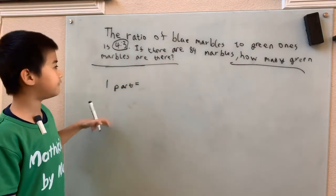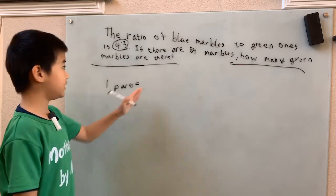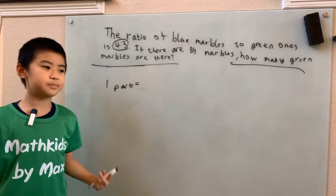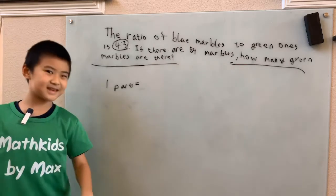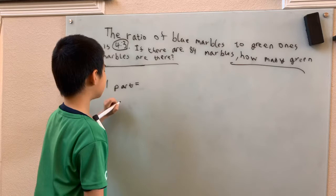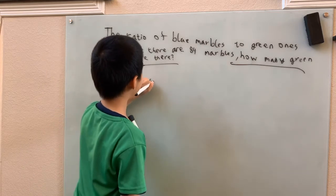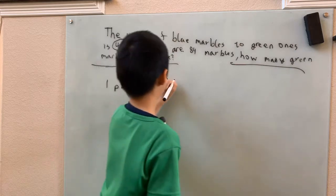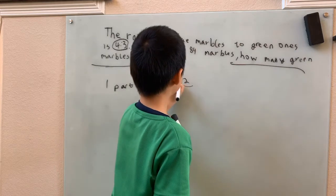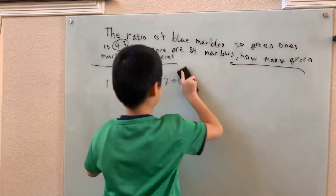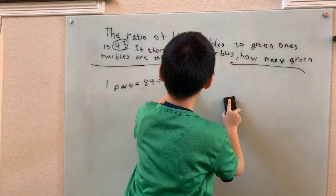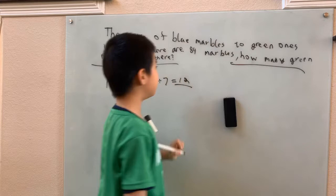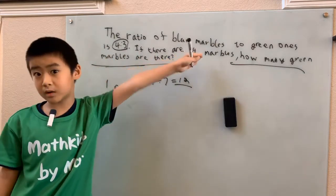So how do we find what one part is worth? Well, there's 84 marbles. Each part has to be the same. You probably guessed that already. So we just have 84 divided by 7, which is 12. So we got 12 marbles in one part if there are 84 marbles in total.